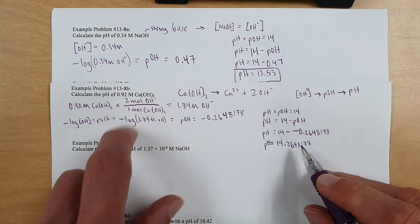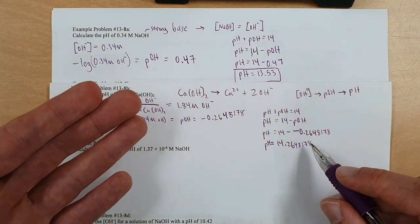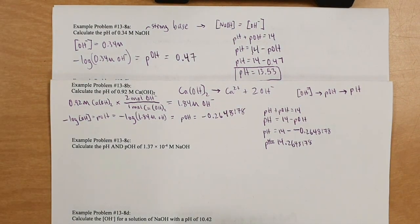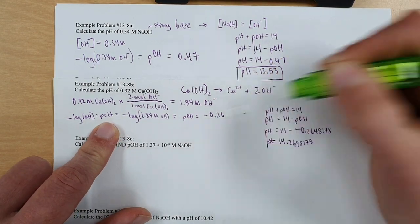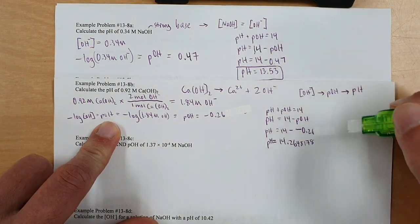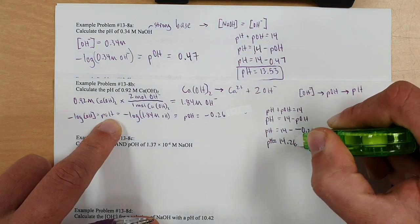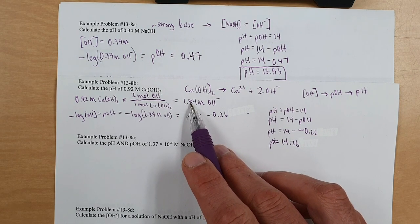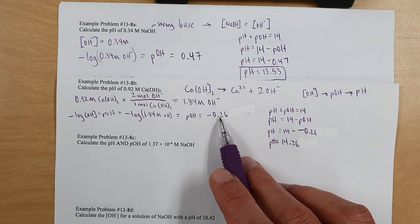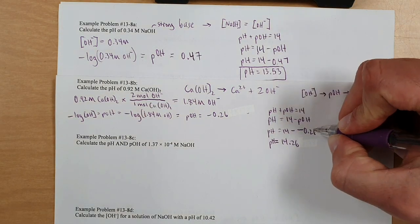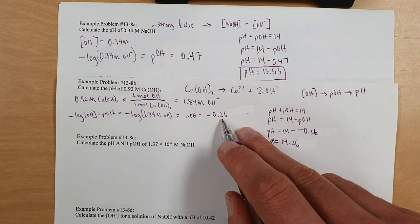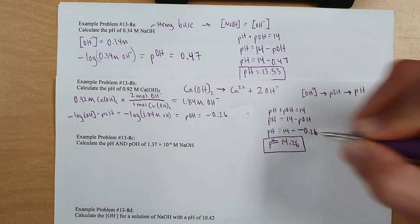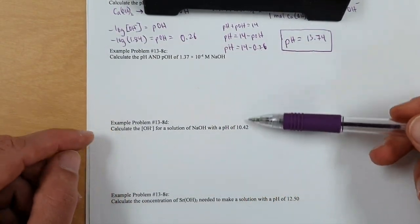We started with two sig figs, so how do we round? We call the pOH 0.26, meaning pH equals 14 minus negative 0.26, which is 14.26. Two sig figs produced a two sig fig answer. I left extra decimals in the intermediate step for accuracy, then rounded at the end. Both pH and pOH go to the hundredths place. Final answer: pH equals 14.26.